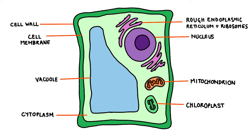Then we have the nucleus, which is a compartment in the cytoplasm that contains genetic material, or DNA. This genetic material is used to make proteins and to control the activities of the cell. There are also mitochondria in the cytoplasm, which have a double membrane and are used to produce energy for the cell using a process called aerobic respiration.